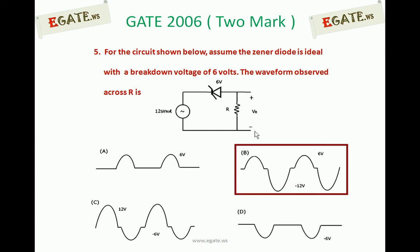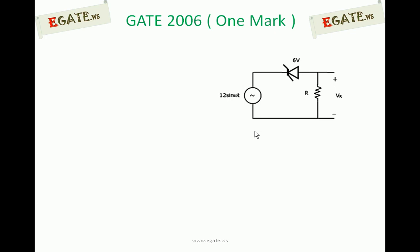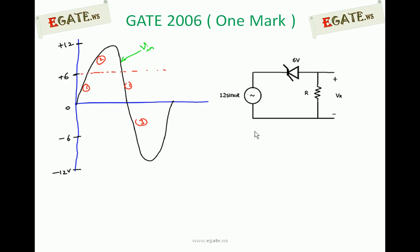We have to identify, for what regions of the given input signal, the Zener diode is under forward bias, reverse bias, or in the breakdown region. Based on that, we identify the voltage across the diode, and the voltage across the resistor is input minus diode voltage. The input waveform 12 sin ωt has a maximum of plus 12 and minimum of minus 12 volts. We divide the input into three regions: 0 to plus 6 volts, 6 to 12 volts, and less than 0 volts.